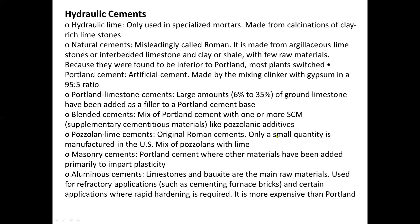Aluminous cements use limestones and bauxite as the main raw materials. They are used for refractory applications such as cementing furnace bricks, and for certain applications where rapid hardening is required. They are more expensive than Portland cement.